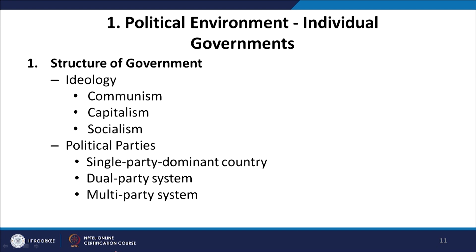In order to understand individual governments, you have to first look at the structure of the government and the ideology — whether it is communism, capitalism, or socialism — and the number of political parties. Is it a single-party country, for example China? A dual-party country, for example the US? Or multiple parties, for example India?